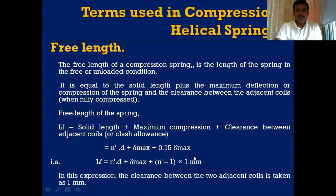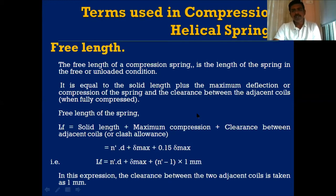Sometimes the clash allowance or clearance between adjacent coils is taken as 1 mm between any two adjacent coils. The number of gaps between n' coils is (n' − 1), so in that case: Lf = n'd + δmax + (n' − 1) × 1 mm. This is the second parameter to remember when designing a compression helical spring.